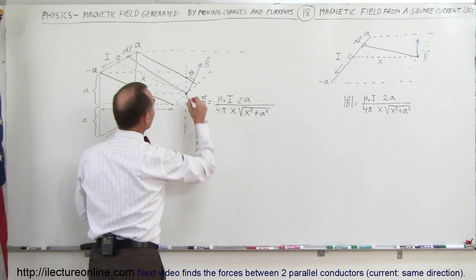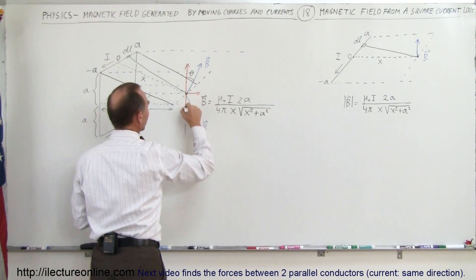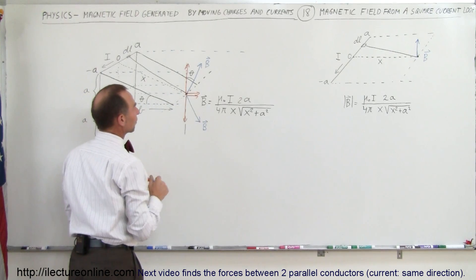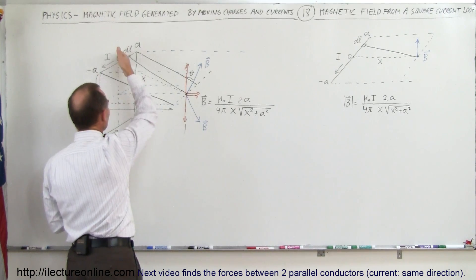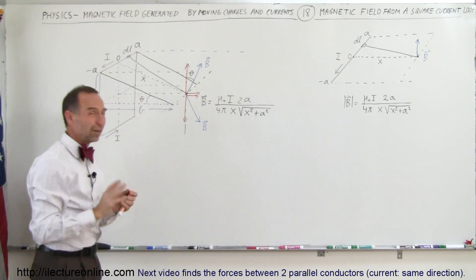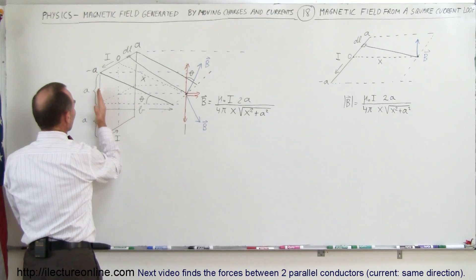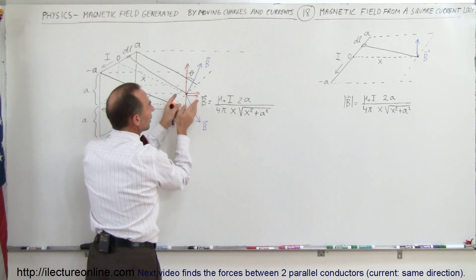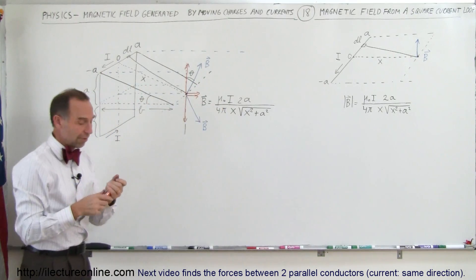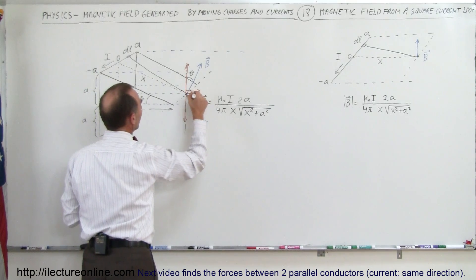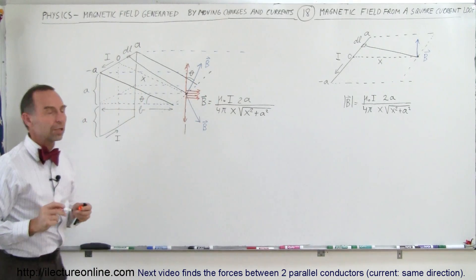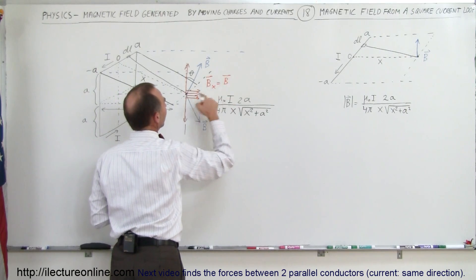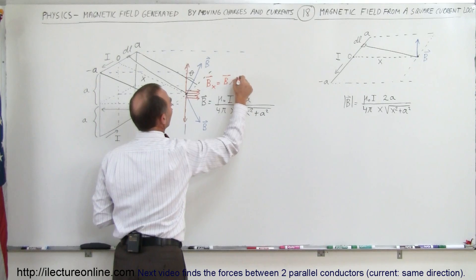Drawing the B field from the bottom segment and from the top segment, and decomposing into components, notice that the vertical components cancel each other out. Only the horizontal components survive. Similarly, taking the two side segments of the square loop — their opposing vertical components cancel, and only the horizontal components contribute. So B_x equals B times the sine of theta.